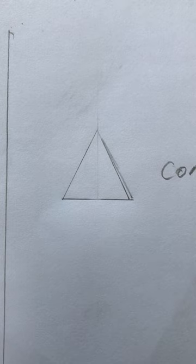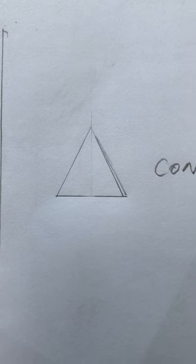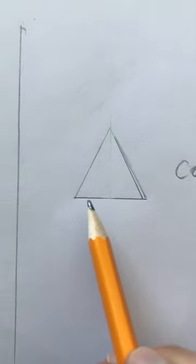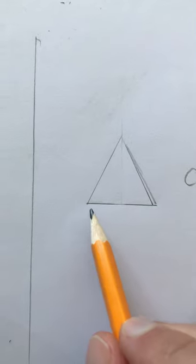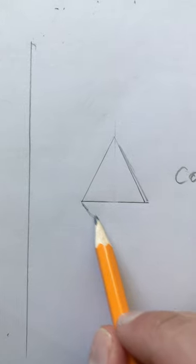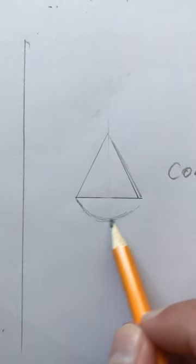We're going to use the same techniques that we used in the sphere, but before we need to do that, we actually need to extend this shape. At the moment it's just a triangle, but to make it more like a cone, we're going to add a curved line at the bottom here.